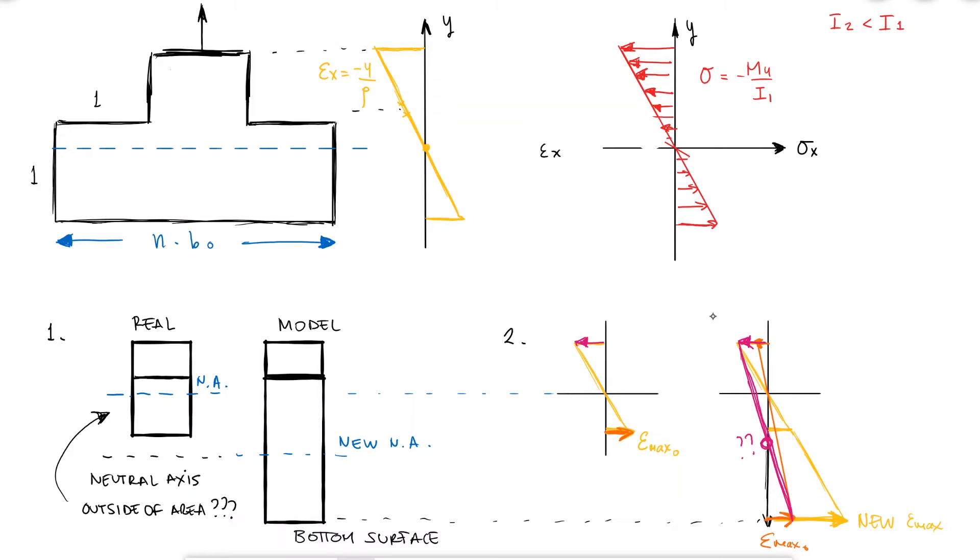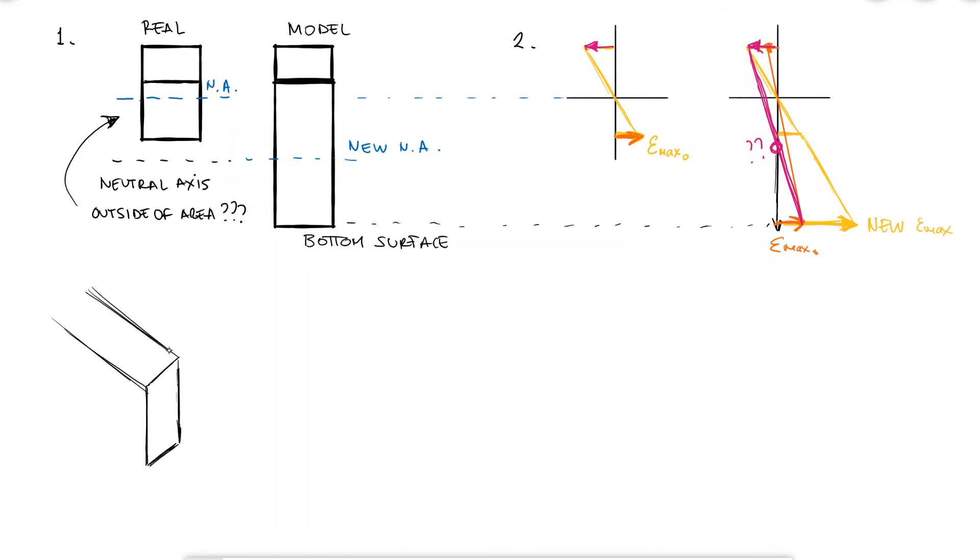One more reason, sufficient on its own as well, but more mathematical and therefore serving as more of a proof, is that the infinitesimal force df that we studied during the last video is obtained by multiplying the stress times the area dA. The stress is the elastic modulus times the strain, and the strain was derived to be minus y over rho.